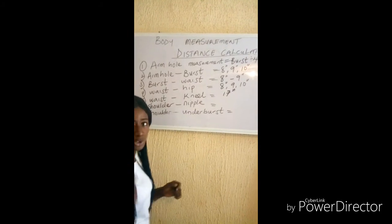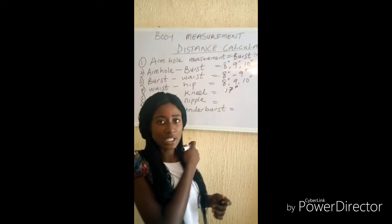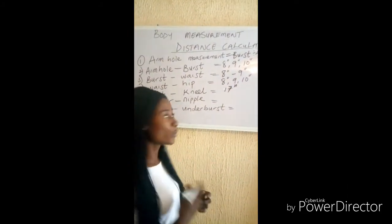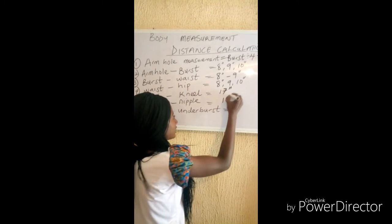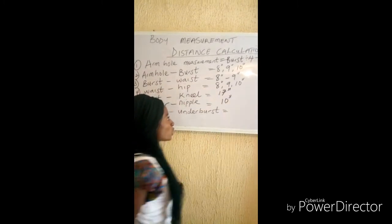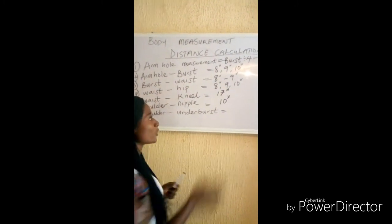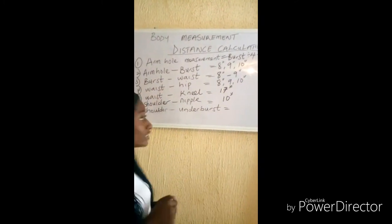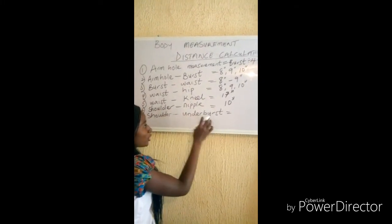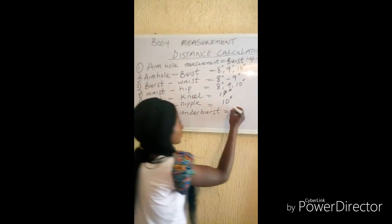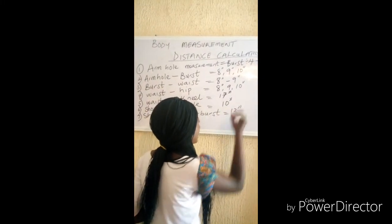From the shoulder to the nipple, you are going to have 10 inches. So when you are marking your fabric, from shoulder to the nipple you have 10 inches. From the shoulder to the under bust, you are going to have 13 inches.